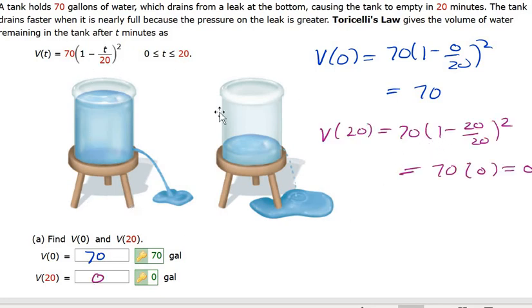And if I plug in 20 into this formula, I'll get zero. The volume should be decreasing, so I start out with more than what I end. These things make sense.